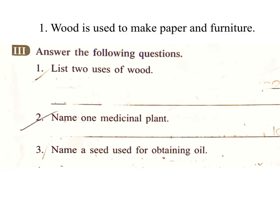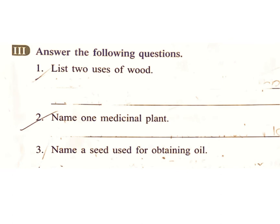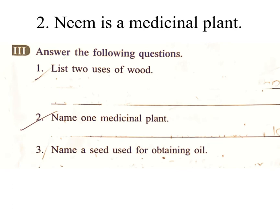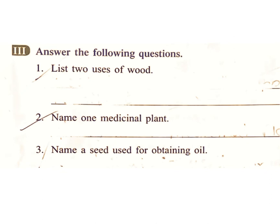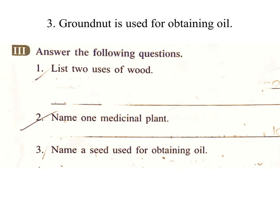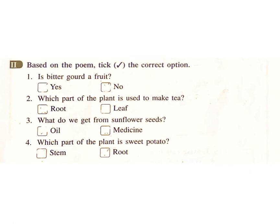Exercise 3 – Answer the following questions. 1. List two uses of wood. Answer: Wood is used to make paper and furniture. 2. Name one medicinal plant. Answer: Mint is a medicinal plant. 3. Name a seed used for obtaining oil. Answer: Groundnut is used for obtaining oil.